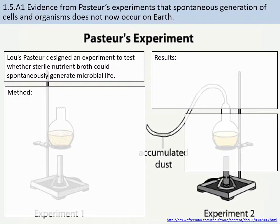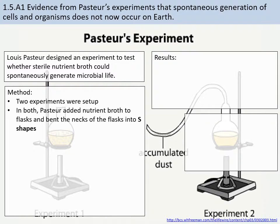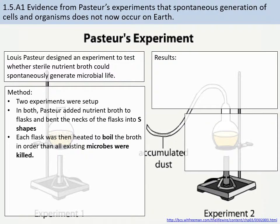To summarize his experiment: Pasteur was trying to determine whether sterile broth could allow spontaneous generation of microbial life. He set up two experiments using special S-shaped or swan-shaped flasks, which were designed to prevent bacteria in the air from getting down into the medium. He then boiled both flasks — raising the temperature high enough to kill any bacteria inside, thereby sterilizing the medium.